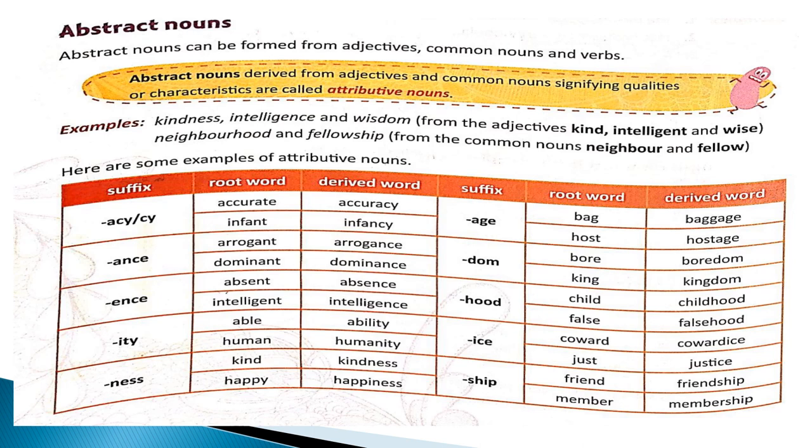For example, from the adjectives kind, intelligent, and wise, we can form attributive nouns: kindness, intelligence, and wisdom. And with common nouns neighbor and fellow, we can make attributive nouns neighborhood and fellowship.